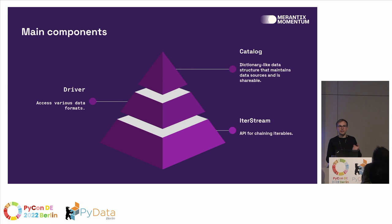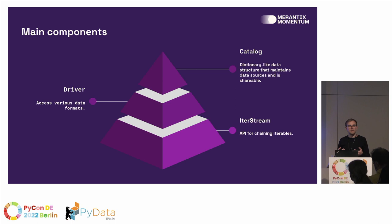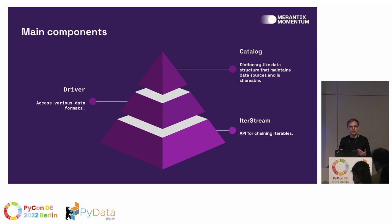The next layer is drivers. Drivers let you read and write different data formats from local and remote places, and implement different interfaces on them — for example, an ITER stream interface. So you can load data from a specific data format and get a standardized ITER stream interface back. And the cherry on top is the catalogue — a dictionary-like data structure that maintains all the different data sources you subscribe to in the data mesh, and lets you access all the different driver instances and from there the ITER streams.